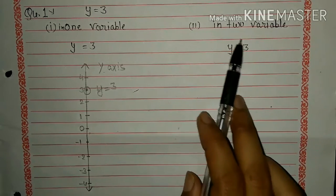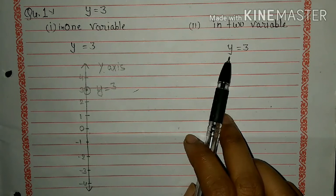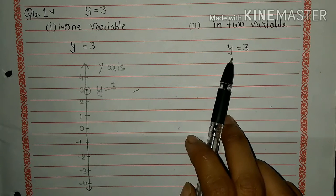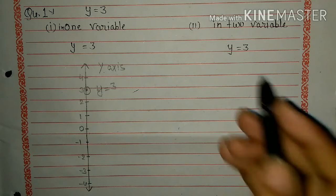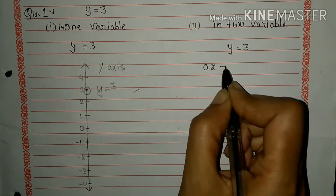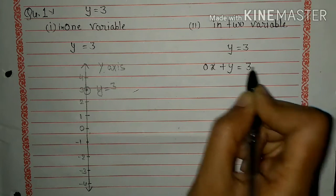You see in this equation only one variable is given. So now we convert y=3 into two variables. How? So let's see: 0x + y = 3.